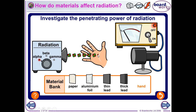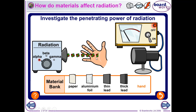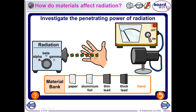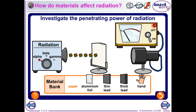Being exposed to an alpha emitter outside your body is not that much of a problem, because most alpha particles will be absorbed by the dead skin cells lining your skin and won't penetrate to inner tissues where they could cause damage. What you do need to worry about is getting any particles of the source inside your body — if you swallow or breathe in an alpha emitter, it will give out alpha particles inside your body, reaching living tissues and causing damage.